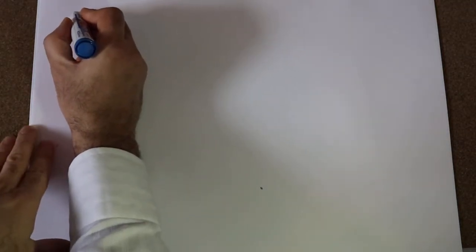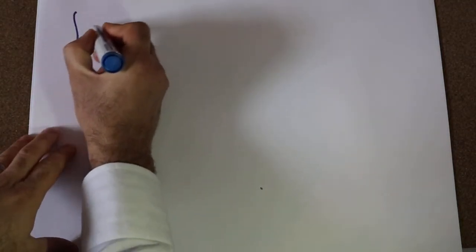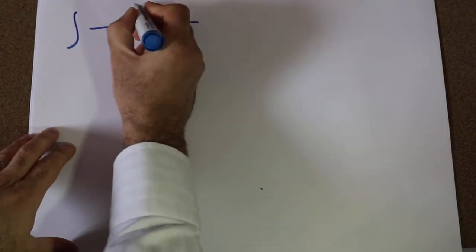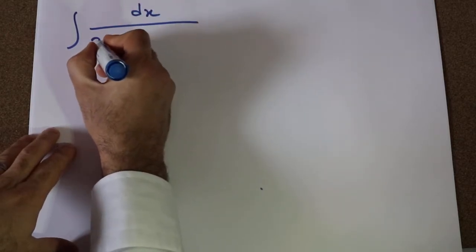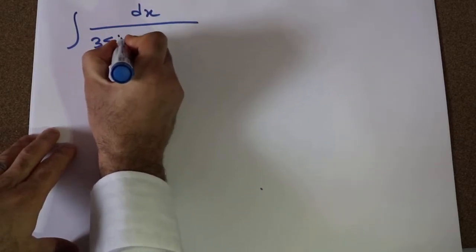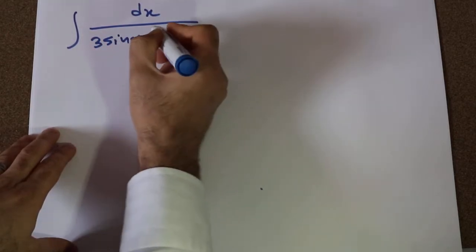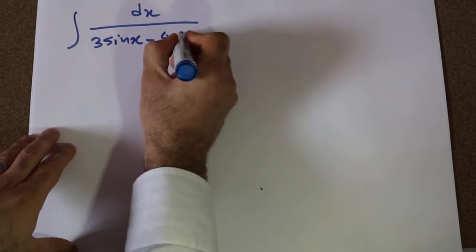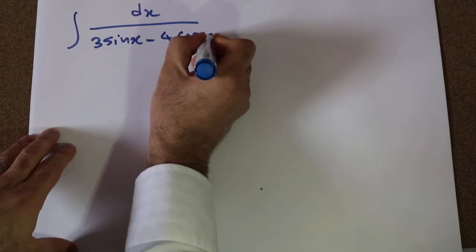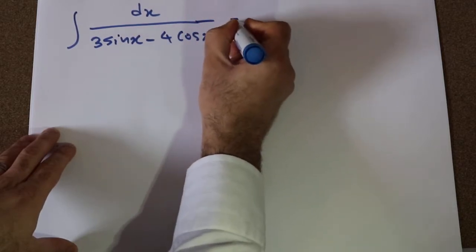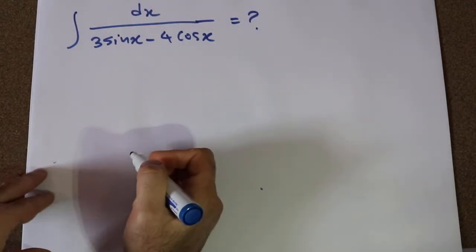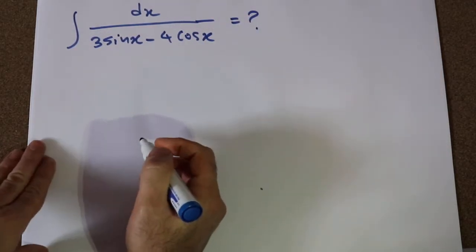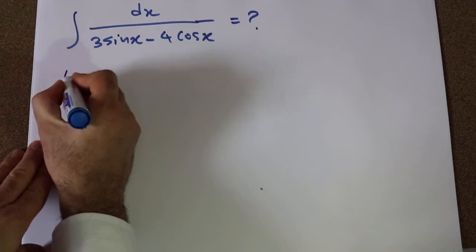Hi, today I'm going to show you how to calculate the integral of dx divided by 3 sine x minus 4 cosine x. To solve this integral, you need to use the substitution rule.